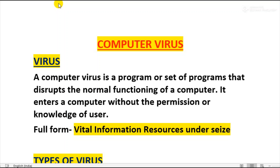Many times while working on a computer it gets hanged, restarts frequently, and sometimes data gets lost. Generally we call it a virus attack. However, in reality it is not only the virus that does it — worms, Trojans, spyware, etc. are also equally responsible for improper functioning of a computer. Worm and virus are often used interchangeably, but they are not the same. In this chapter I will explain all these malicious programs in detail.